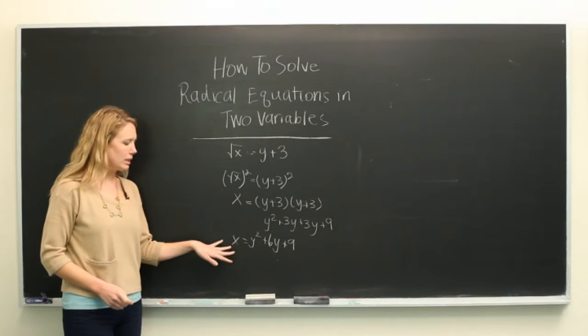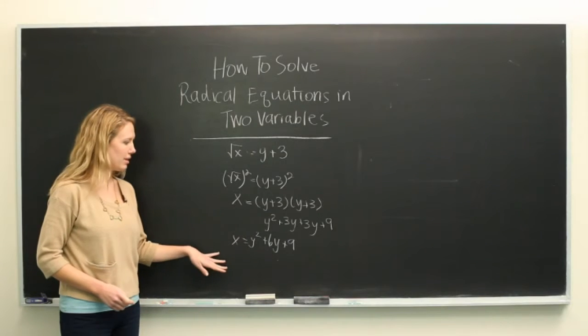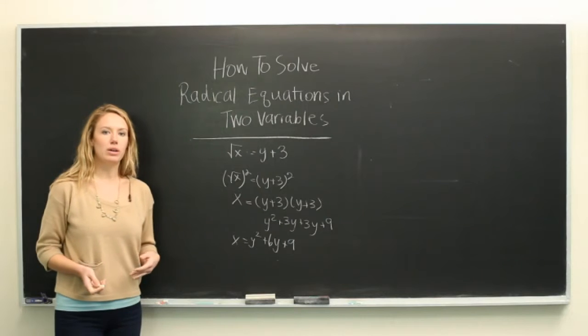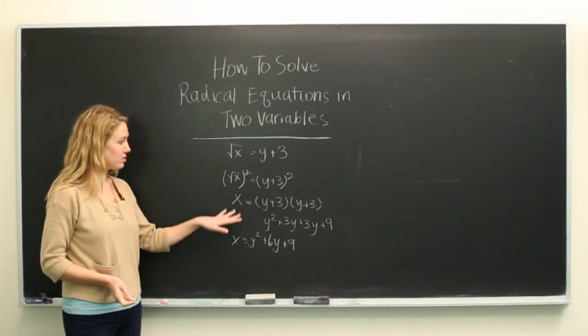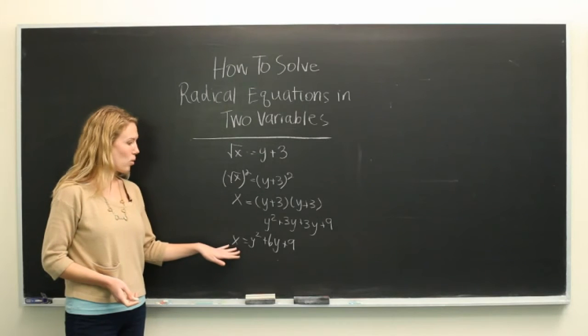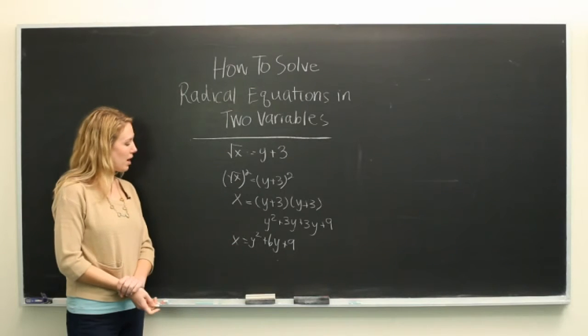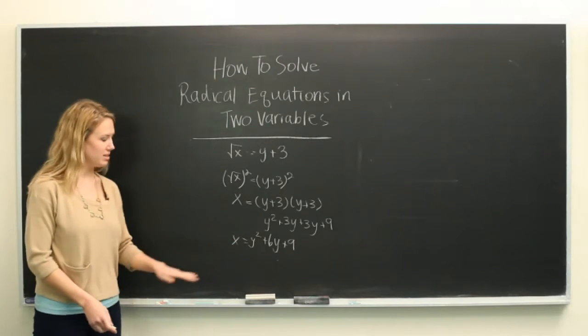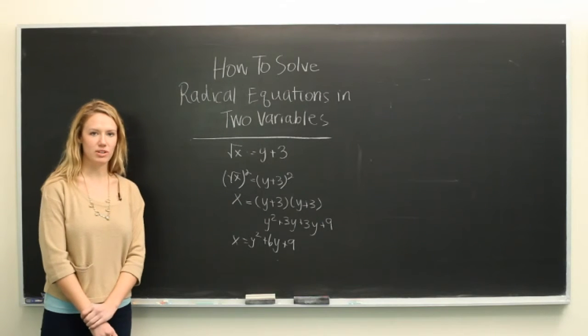Now, this is the furthest that we can get this equation at this time. If we knew the value of y, we could solve this radical equation with two variables for x. But this is the simplest form of the radical equation in two variables. Thanks for watching.